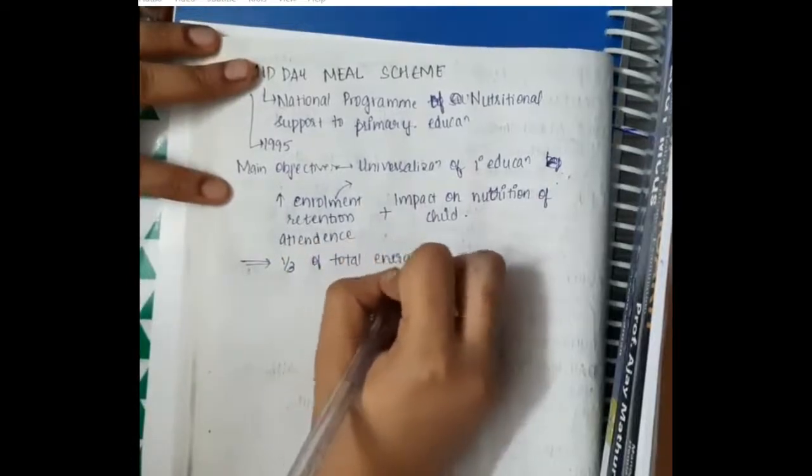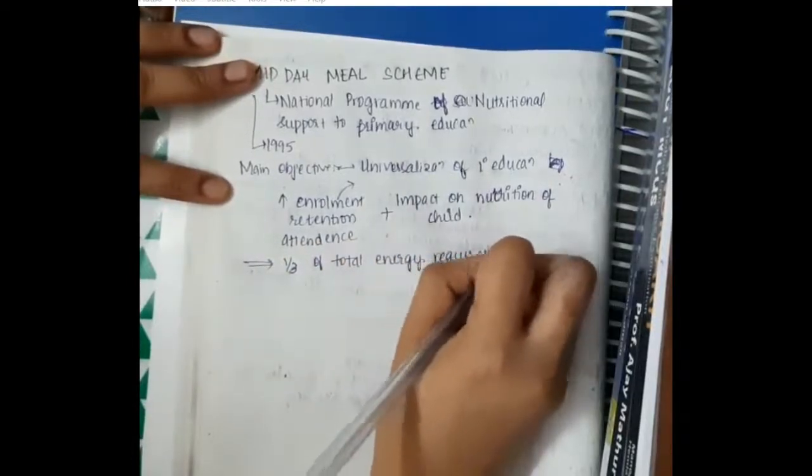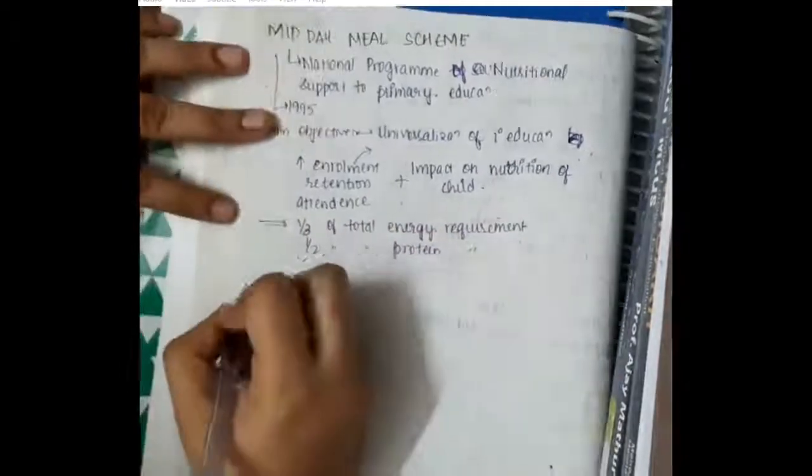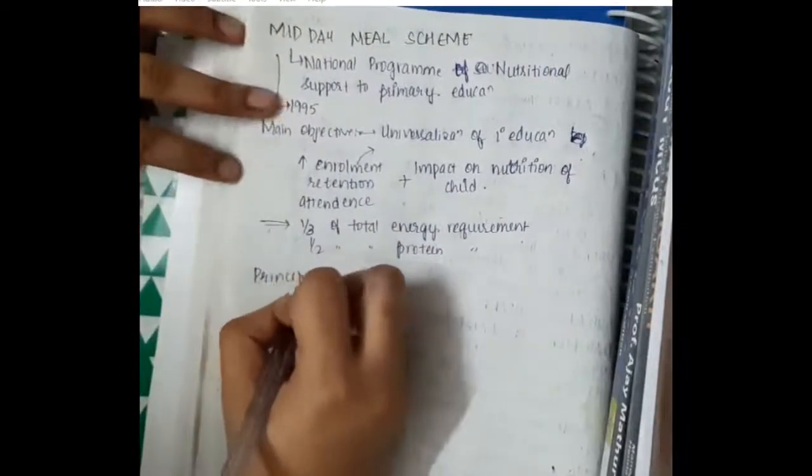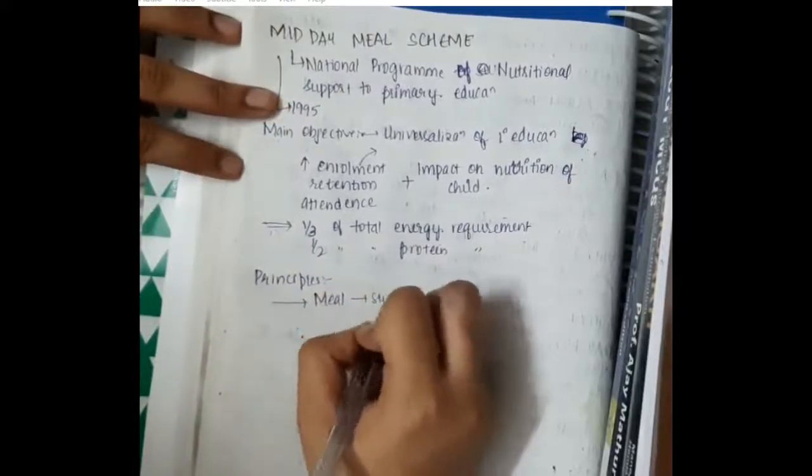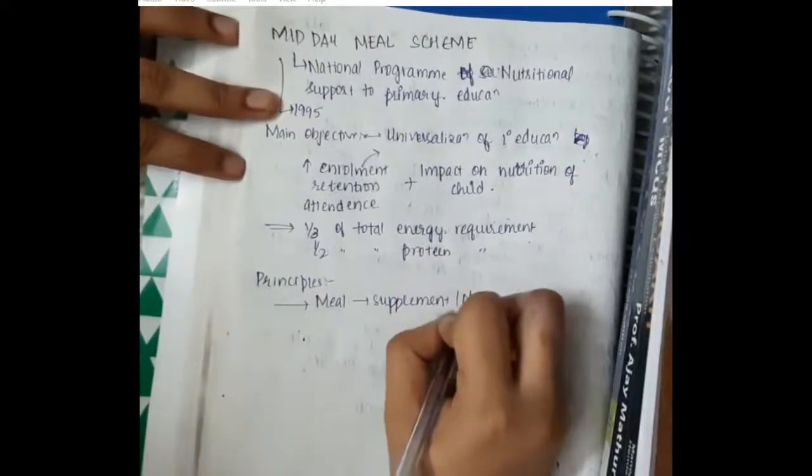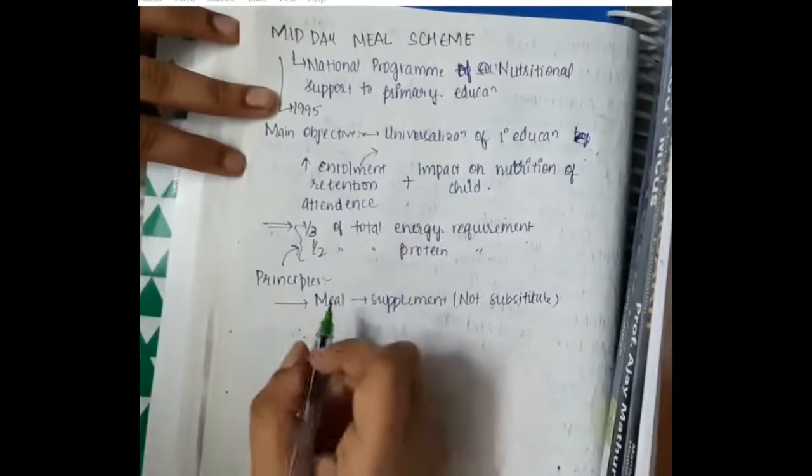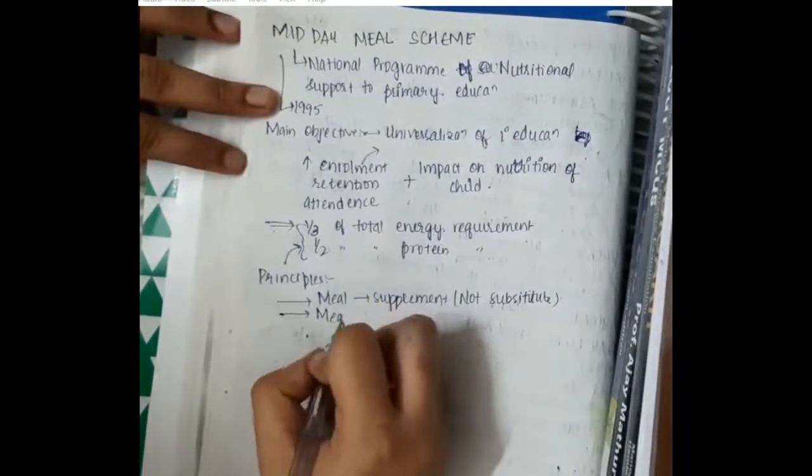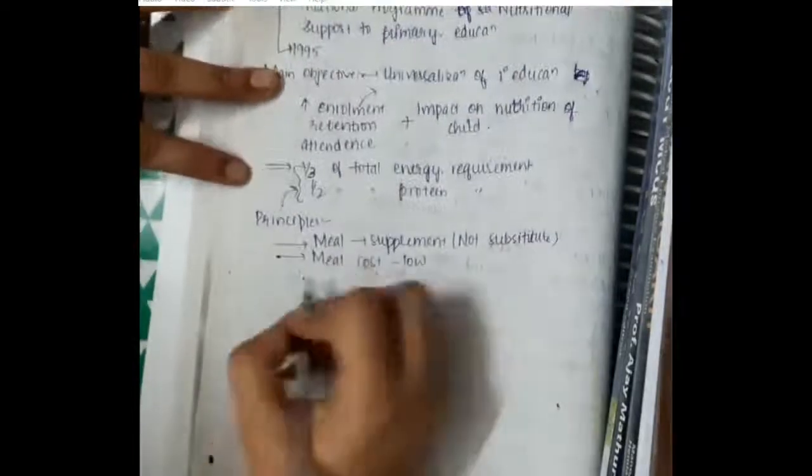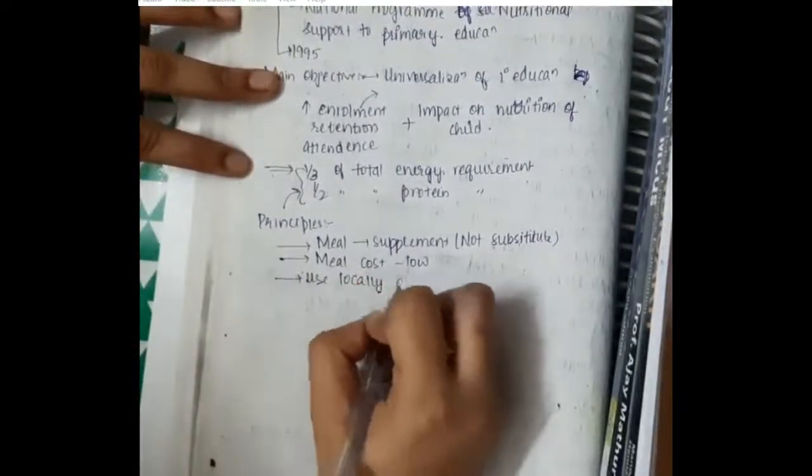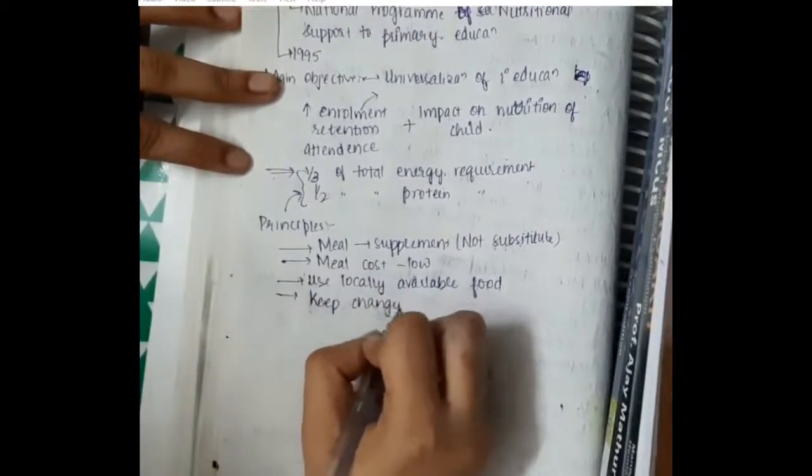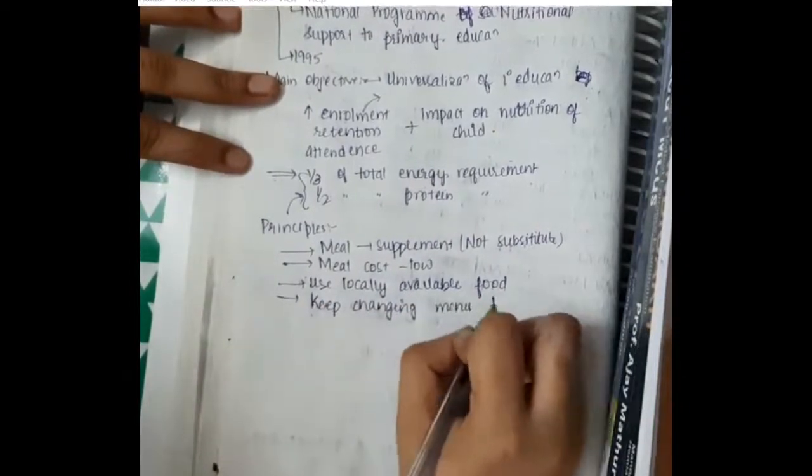With the help of this Midday Meal Program, it will provide one-third of total energy requirement and half of total protein requirement. Principles of the Midday Meal Scheme include: the meal provided is supplementary, not a substitute; it should be low cost and easily given; we should use locally available food and keep changing the menus frequently to help children have a good, balanced, healthy, happy diet.